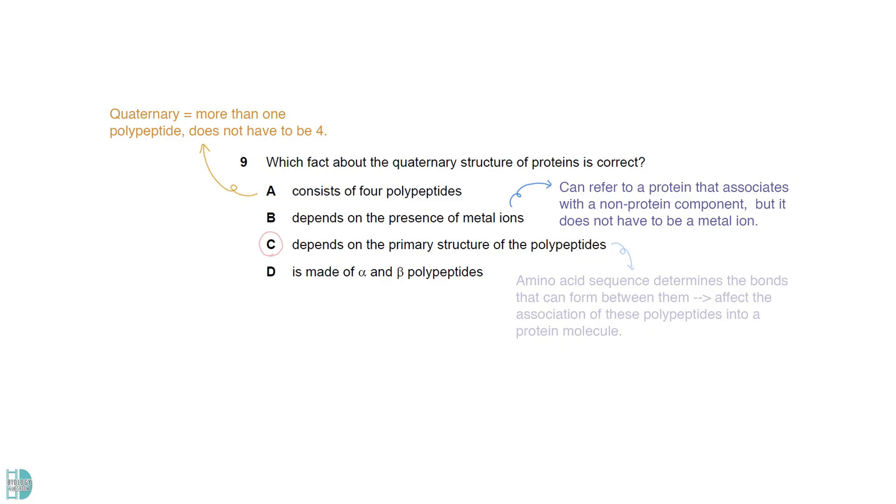C is correct. The amino acid sequence in those polypeptides determines the bonds that can form between them. This will affect the association of these polypeptides into a protein molecule. D is wrong. Alpha and beta polypeptides are true for hemoglobin, but it is not a fact about all proteins that have a quaternary structure.